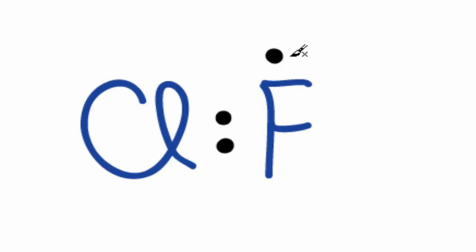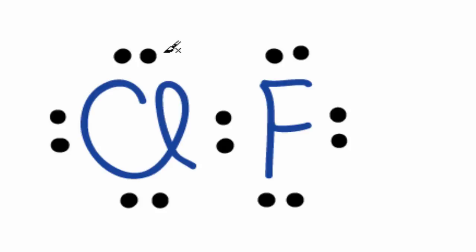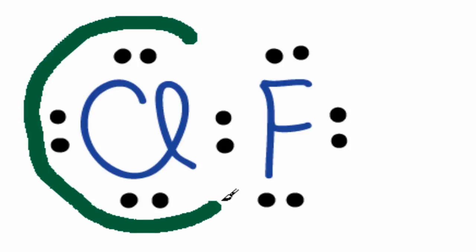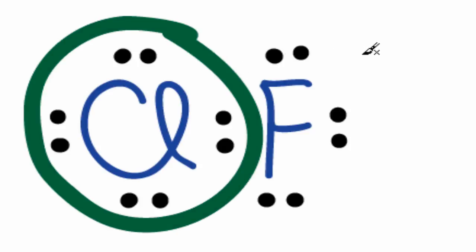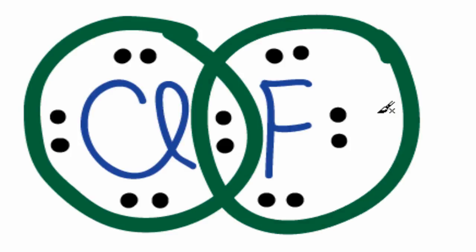So we have 2, 4, 6, 8, 10, 12, and 14. We can see now that the chlorine has 8 valence electrons, so its outer shell is full, and the fluorine has 8 valence electrons in its outer shell, so that gives it an octet as well.